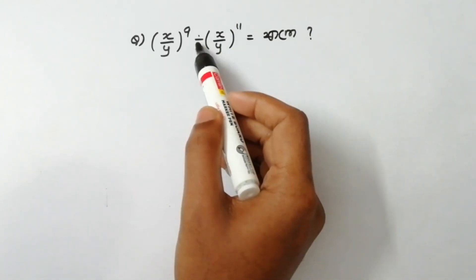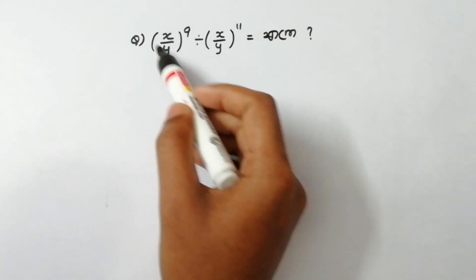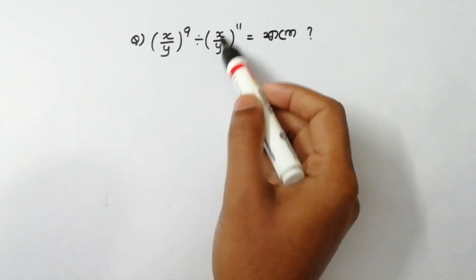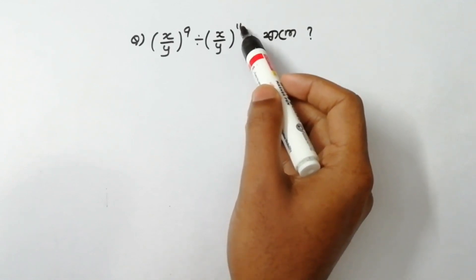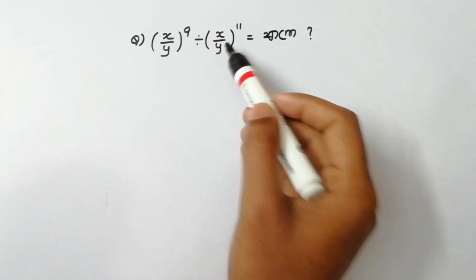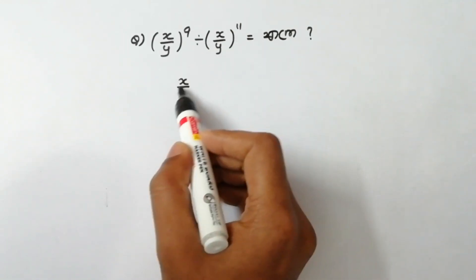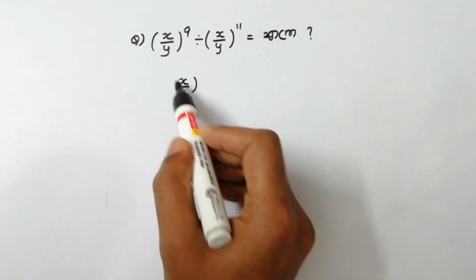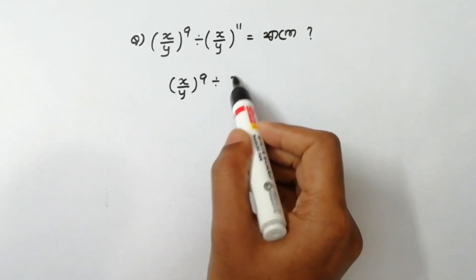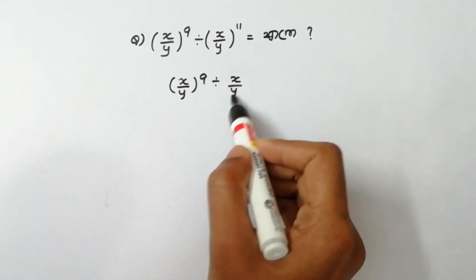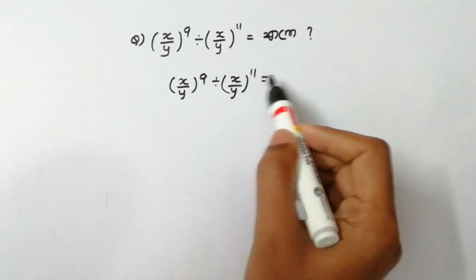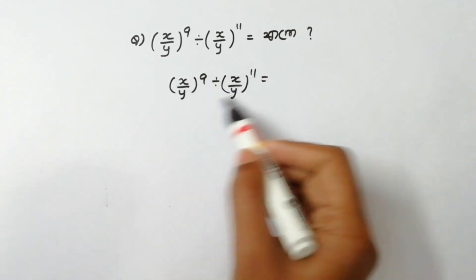We have one problem here: (x/y) raised to power 9, divided by (x/y) raised to power 11. What do we do? This is the division rule.